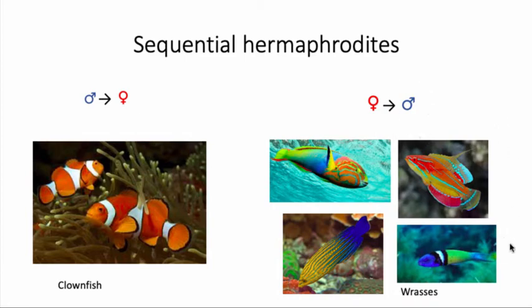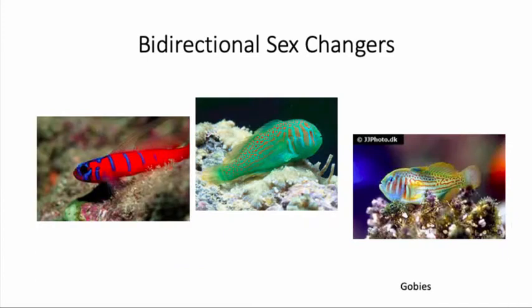This sex change from female to male is something we see in almost all species of wrasses. We also have organisms that switch sex back and forth depending on conditions or their social environment — the gobies, for example, can switch from male to female or female back to male. During the in-between period for all these sequential hermaphrodites, there will be a time when they are intersex, transitioning between sexes.